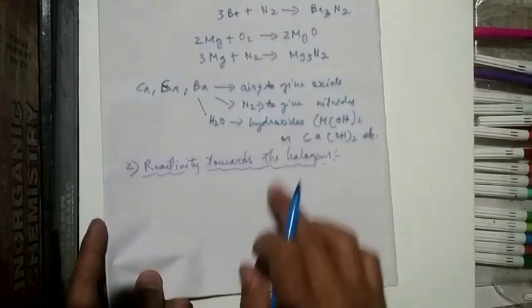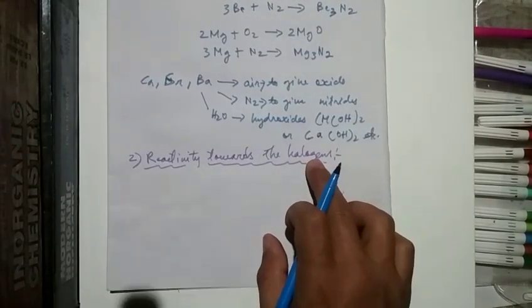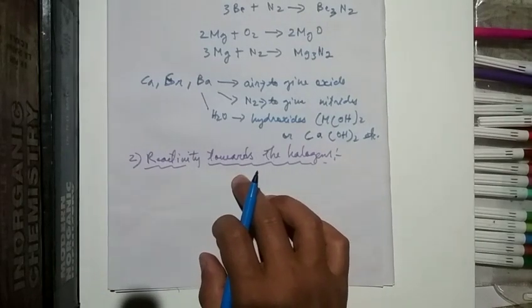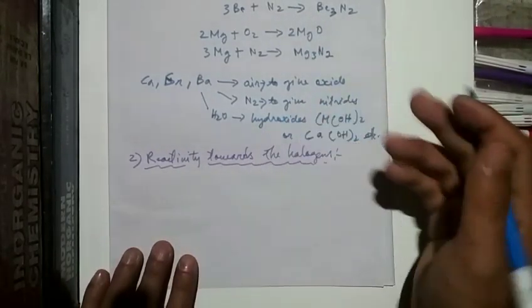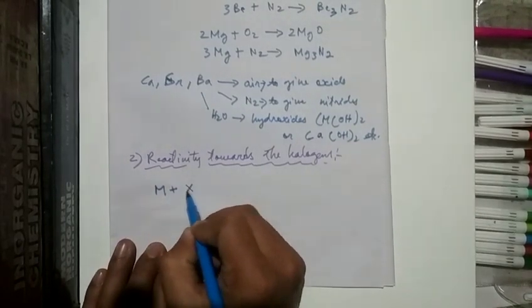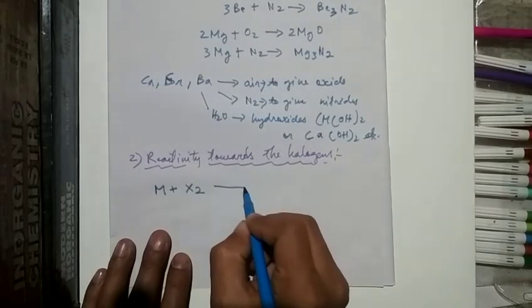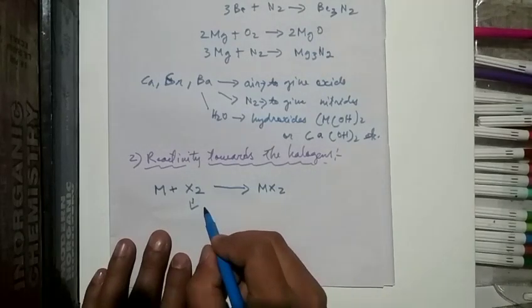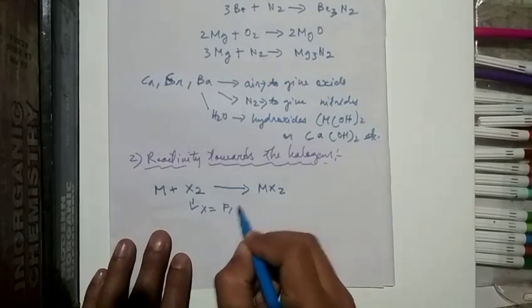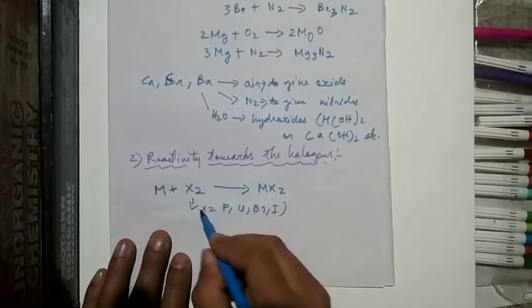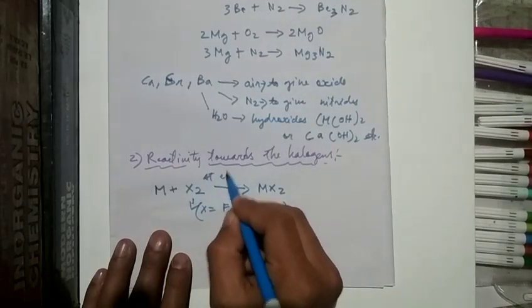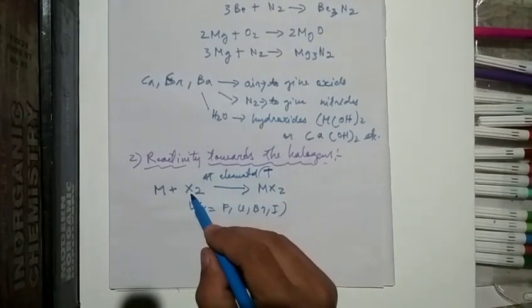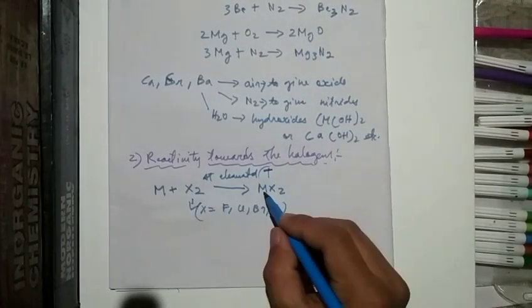Now, reactivity towards halogens. They combine with halogens at elevated temperature: M + X₂ → MX₂, where X can be any halogen such as fluorine, bromine, or iodine. At elevated temperature they combine with halogens to form metal halides.